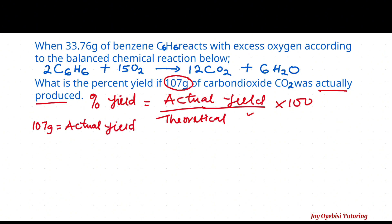We have our actual yield but we do not have the theoretical yield. For the theoretical yield, we're going to make use of the 33.76 grams of benzene and use it to find the theoretical yield of carbon dioxide. Note: whichever product you are given is what you're going to look for. Since they said 107 grams of carbon dioxide was actually produced, you're going to find the theoretical yield of carbon dioxide.